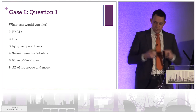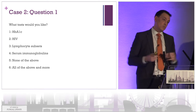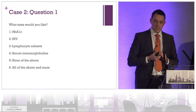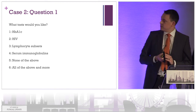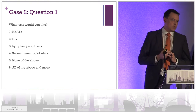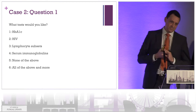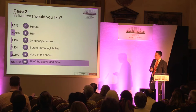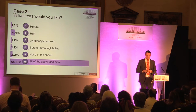Do you think there's an immunodeficiency going on, and what tests would you like to see in someone who presents with this sort of problem? Would you like the HbA1c, an HIV test, some lymphocyte subsets, some immunoglobulins, none of the above, or all of the above and some more tests? Most people voted for all of these and a few more tests — it's always good to do more tests.